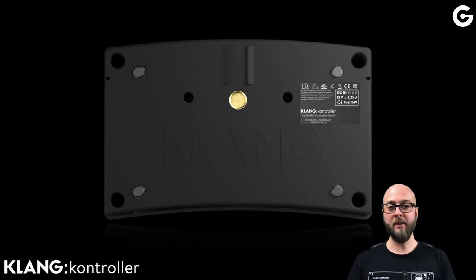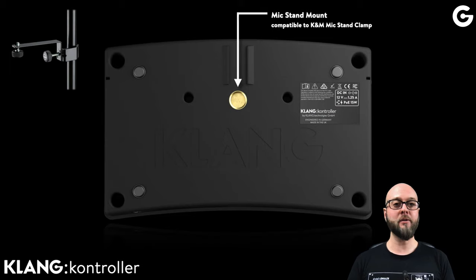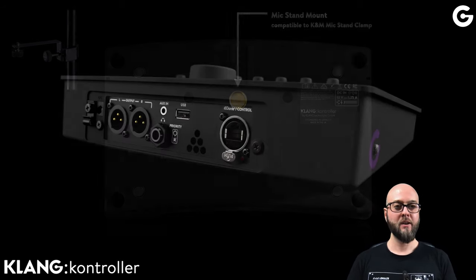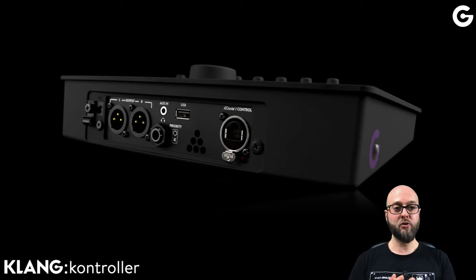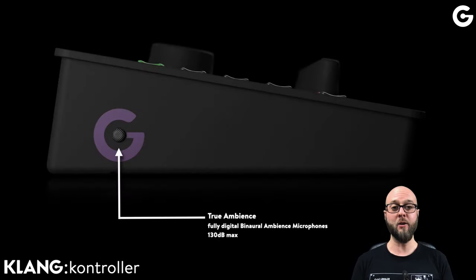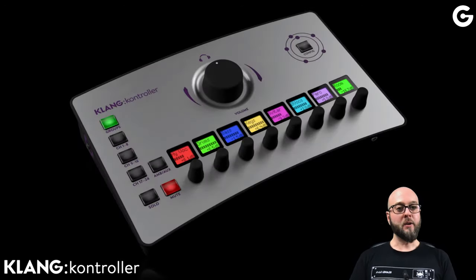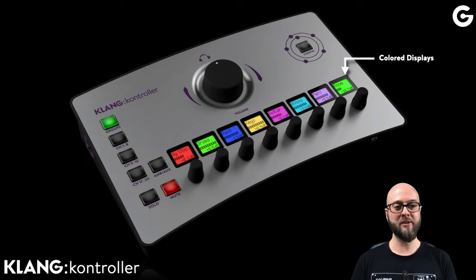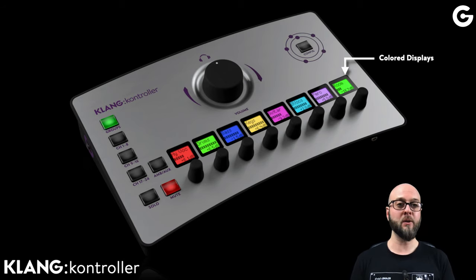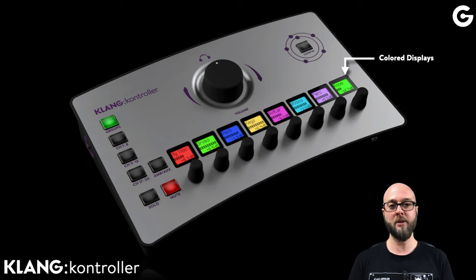The device can be used as a tabletop device or it can be mounted on a microphone stand, ideally by using the K&M mic stand clamp. We introduced the True Ambience Microphones, which is a set of fully digital binaural ambience microphones that can handle up to 130 decibels. One of the most eye-catching features would be the color displays, which show me everything I need to know: the name, the metering, the level, mute and solo. Each channel can have a different color, which is great for overview.